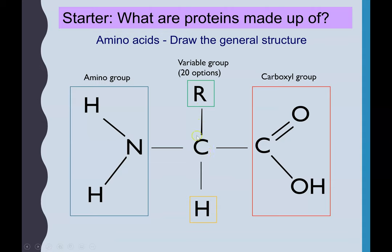The final part is a hydrogen. So just remember, when you're trying to draw your amino acids, central carbon which makes four bonds, and these are your four different groups.